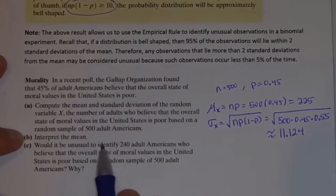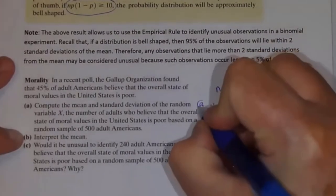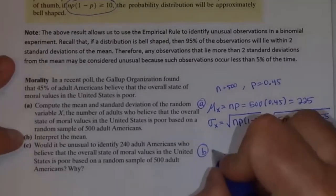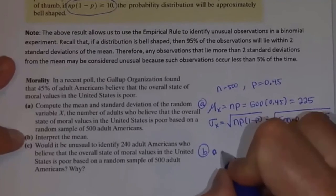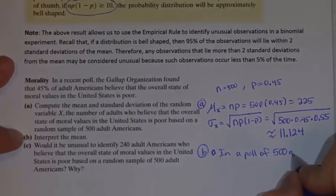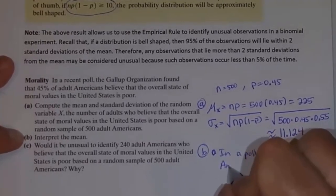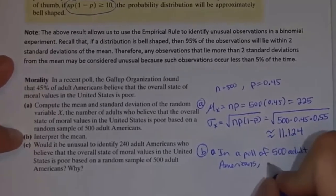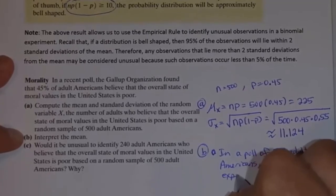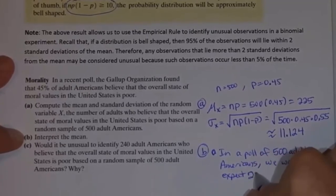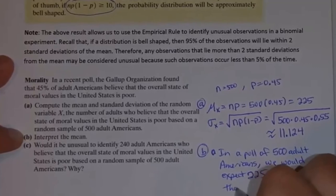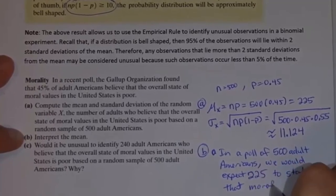The mean or expected value is 225, with a standard deviation of 11.124. Part B asks us to interpret the mean: in a poll of 500 adult Americans, we would expect 225 to state that morals are poor.